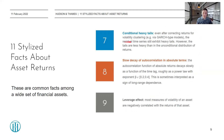For point seven continued, the residual time series, despite volatility correction, still exhibits heavy tails — however, these tails are less heavy than in the unconditional distribution of returns. Point eight is slow decay of autocorrelation in absolute returns: the autocorrelation function of absolute returns decays slowly as a function of the time lag, roughly as a power law with exponent beta taking values in the interval 0.2 to 0.4. This is sometimes interpreted as a sign of long-range dependence.